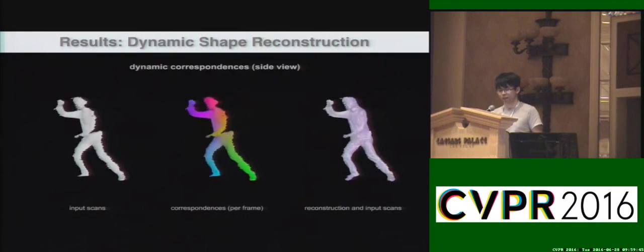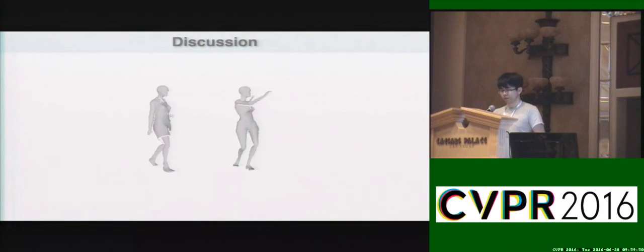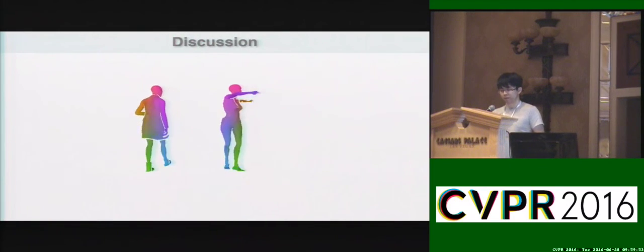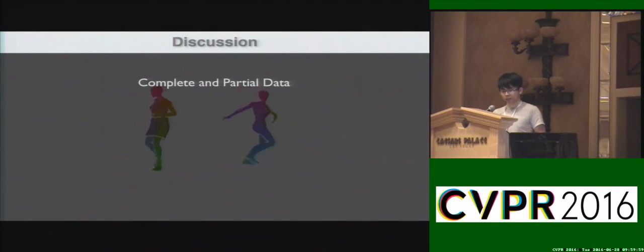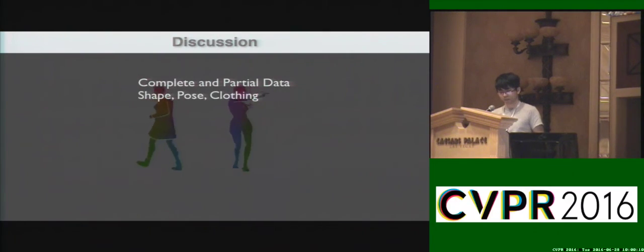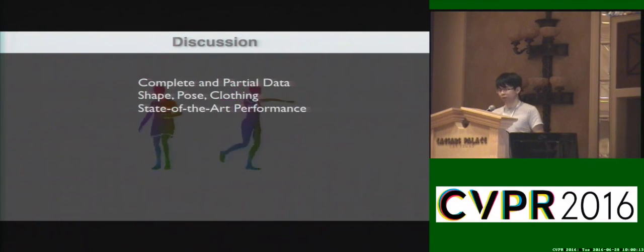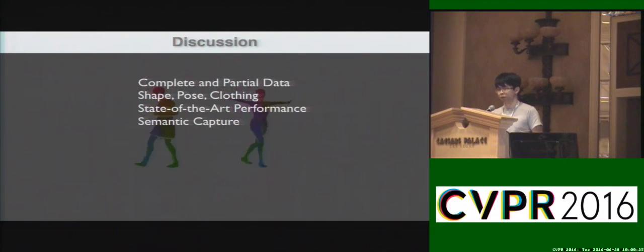Imagine that you can see the full person from only a single view. Let me summarize my talk here. Our deep neural net can provide a consistent descriptor across complete and partial data, under different shape, pose, and clothing. The performance achieves state-of-the-art, and such a network provides us the possibility to capture the real semantic meaning, rather than only the geometry of the meshes.